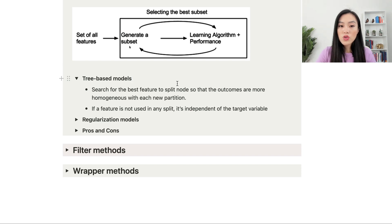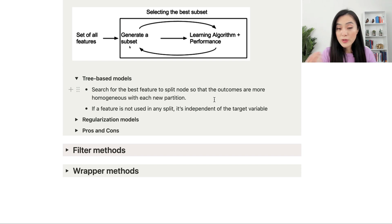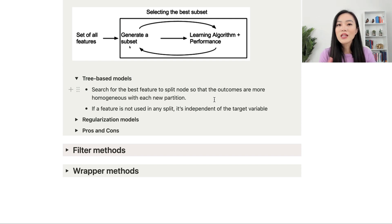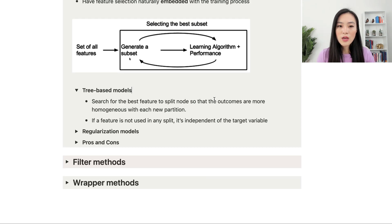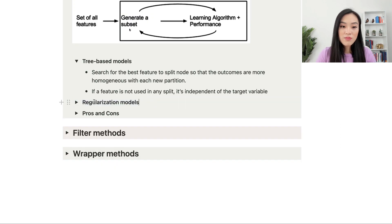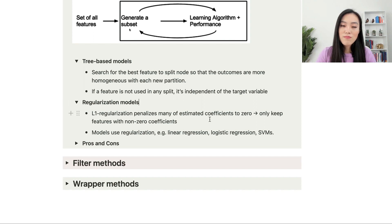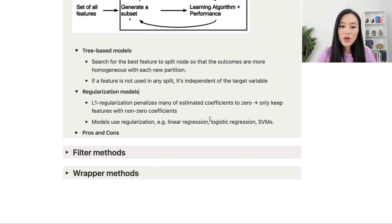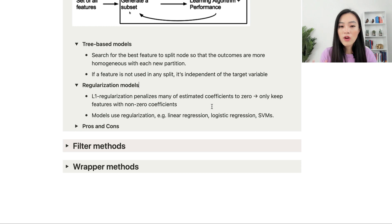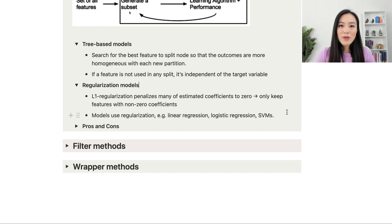Tree-based models such as decision trees, random forests, and gradient boosted trees are examples of intrinsic methods. Decision trees search for the best feature to split nodes, making outcomes more homogeneous. If a feature is not used in any split, it can be considered independent of the target variable. Another example is regularization: L1 regularization penalizes coefficients to zero, so models like linear regression, logistic regression, and support vector machines keep only features with non-zero coefficients.